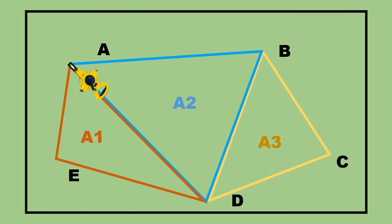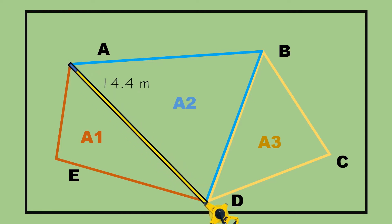Step 3: Measure the base of the first triangle chosen in the polygon using tape, which is 14.4 meters.